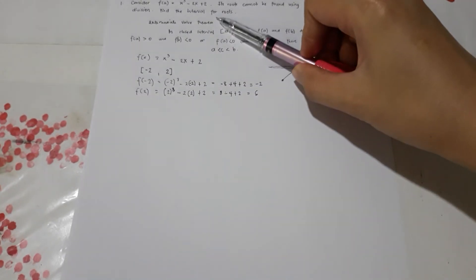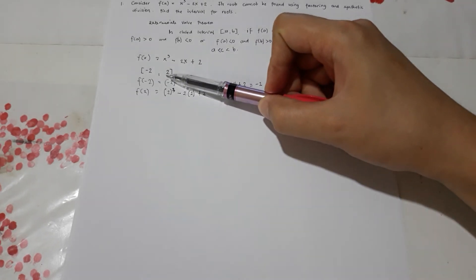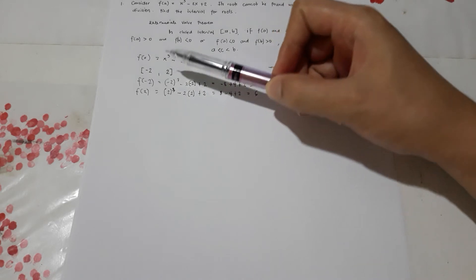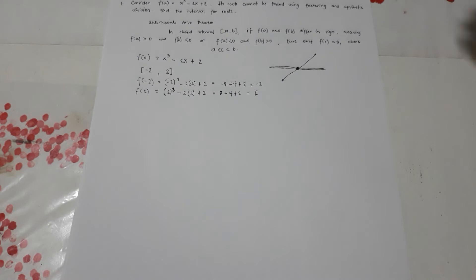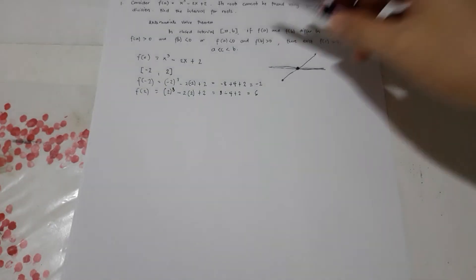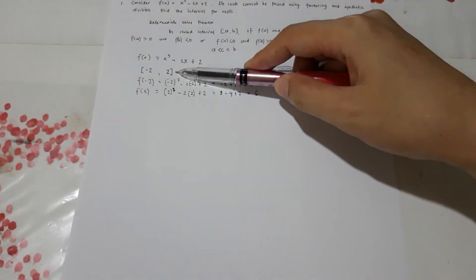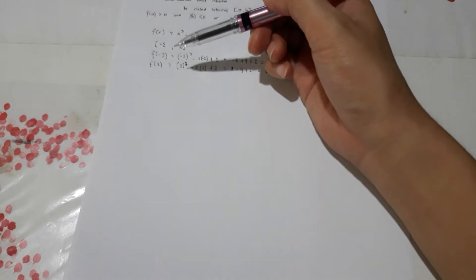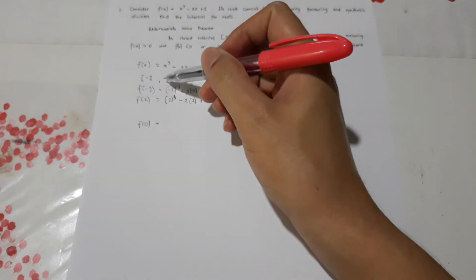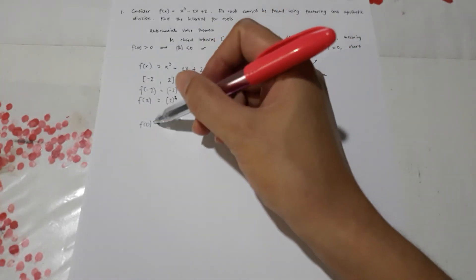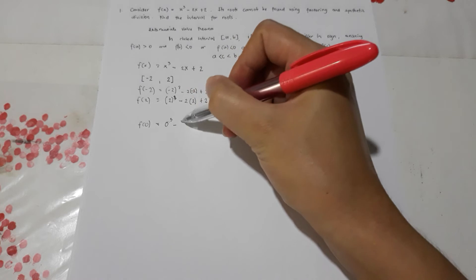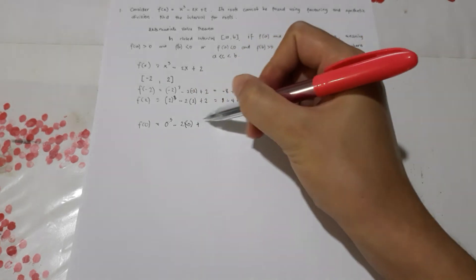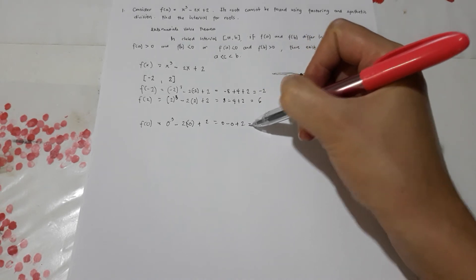The interval from -2 to positive 2 has a length of 4. To make the interval smaller, we choose a number in between -2 and 2 — we'll choose 0. So f(0) = (0)³ - 2(0) + 2 = 0 - 0 + 2 = positive 2.